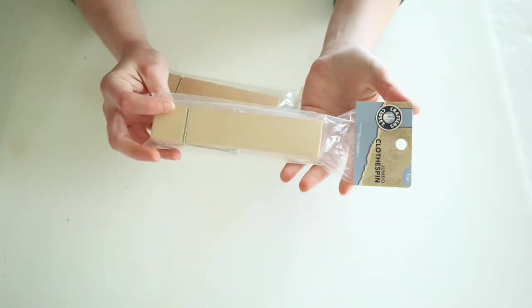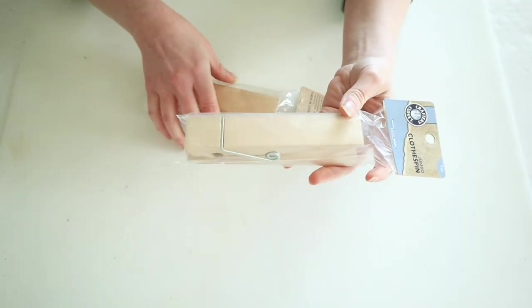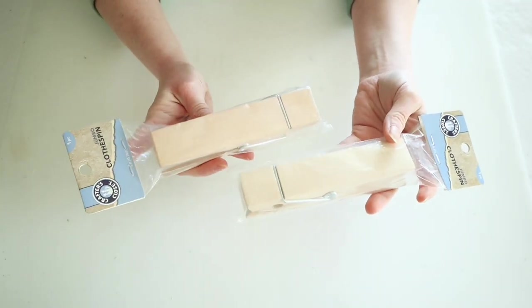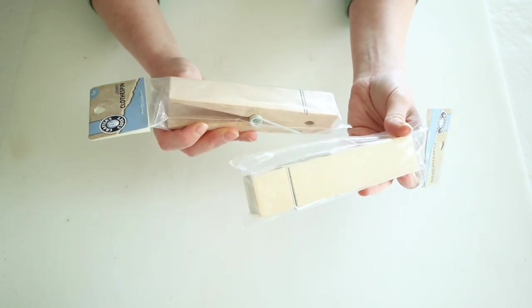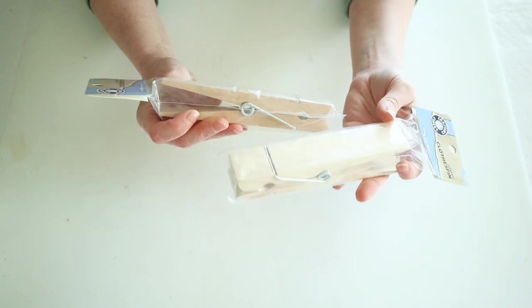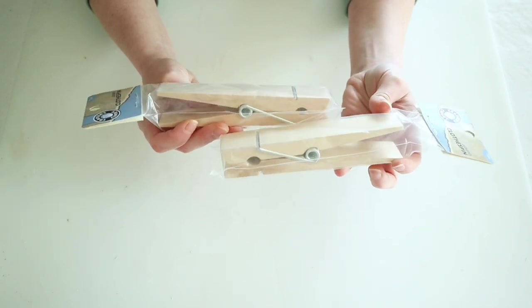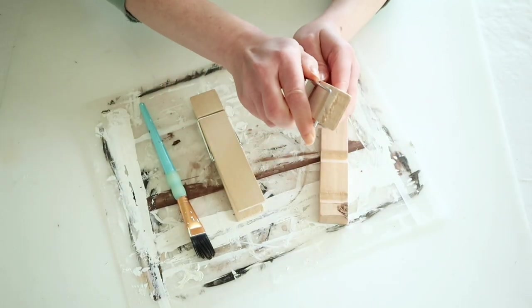For this first project, I found these jumbo clothespins at Dollar General in the clearance section for about 50 cents each. I thought these would be super cute little picture stands, so I'm starting out by just taking these all apart.